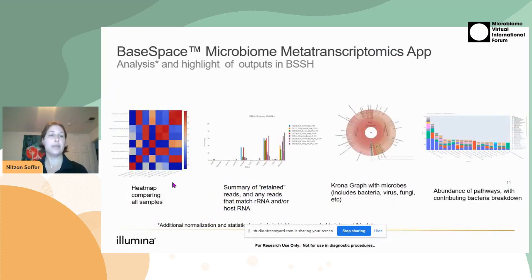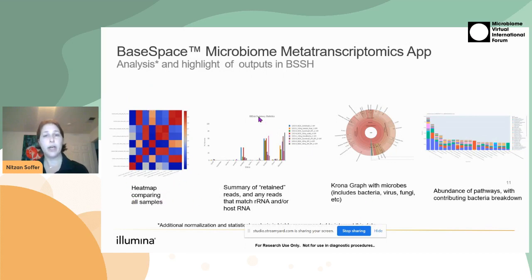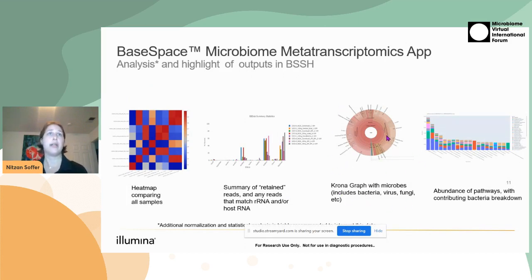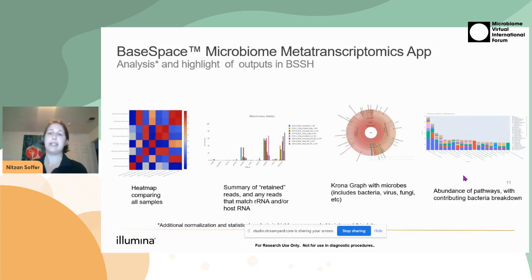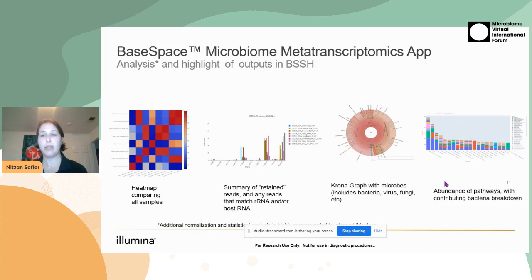Here are some visualizations you can see from the BaseSpace app when you run your samples. There's a heat map comparing all the samples, a summary of how many RNA reads are remaining, and if you're running the Kaiju pipeline, a Krona graph that shows not just bacteria but also viruses, fungi, or any other organisms. And of course what people are most interested in — the pathways — with GO terms and various different levels of pathway detail.